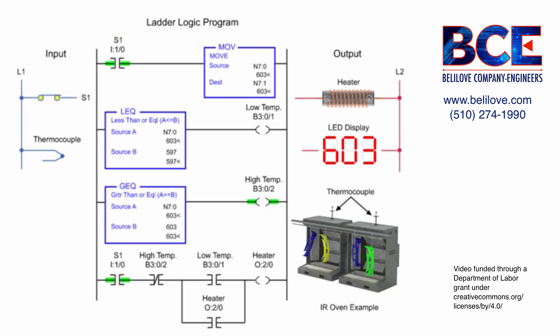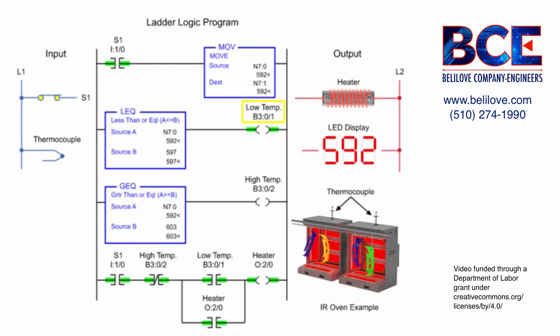Using the less than or equal to and greater than or equal to instructions addressed to the same integer file, the source values of A and B are compared to control the heater. With source A less than source B of the less than or equal to instruction, the low temp and heater outputs are enabled.